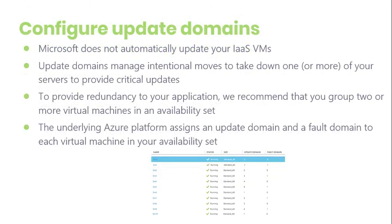Sometimes you need to update your app, or Microsoft needs to update the host that your VMs are running on. Note that Microsoft does not automatically update your VM — you have complete control for that. But if Microsoft identifies a serious security vulnerability and creates an update, it is in Microsoft's interest to apply the update to the host of your VM as soon as possible. This is done without taking your service offline by using update domains — similar to the fault domain method, but instead of an accidental failure, a purposeful move takes down one or more servers to make sure your service does not go offline because of an update.